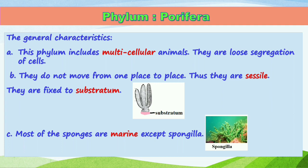Most animals belonging to Porifera are fixed in one place and found in aquatic habitats — mostly marine. Most sponges are found in marine aquatic habitat, but Spongilla is one that is found in fresh water. Marine water means salty water, that is in the ocean or sea.